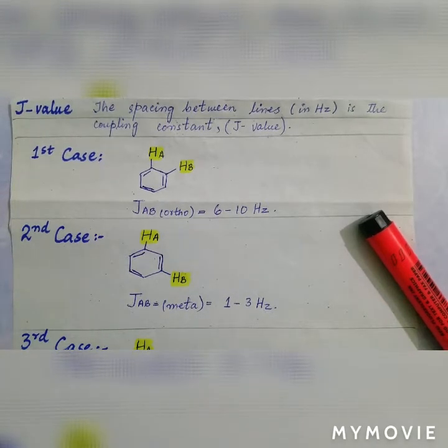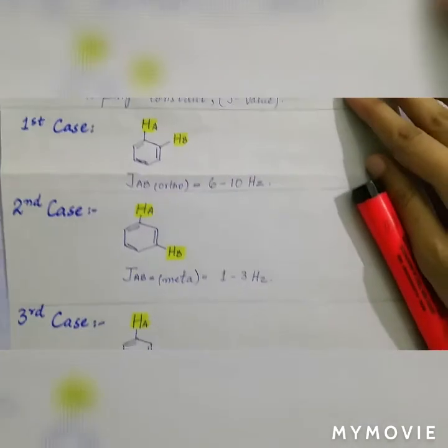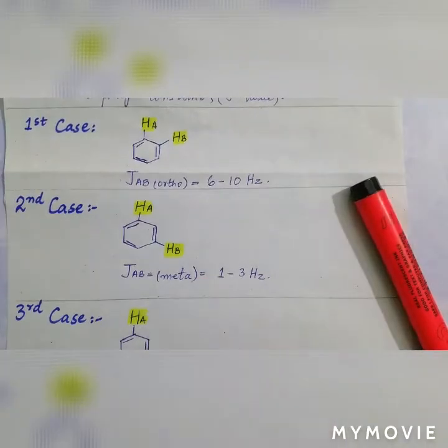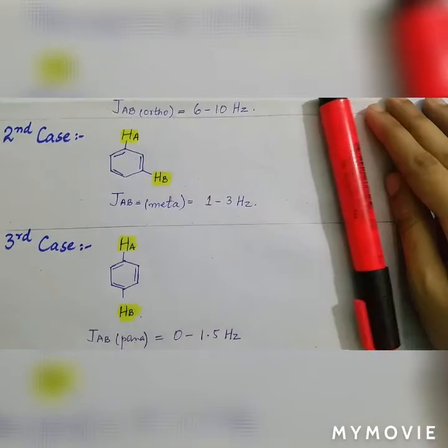And it is the factor which differentiates ortho, meta and para from each other. This J value is different in each case. It is the largest in the case of ortho, lesser than ortho in case of meta, and the least one in the case of para, 0 to 1.5 hertz.